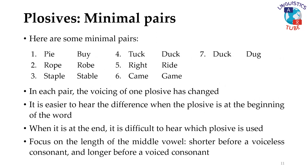Here are some minimal pairs: Pie / Buy, Rope / Robe, Staple / Stable, Tuck / Duck, Write / Ride, Came / Game, Duck / Dug. Now, please pause the video and say these minimal pairs yourself. In each pair, the voicing of one plosive has changed.